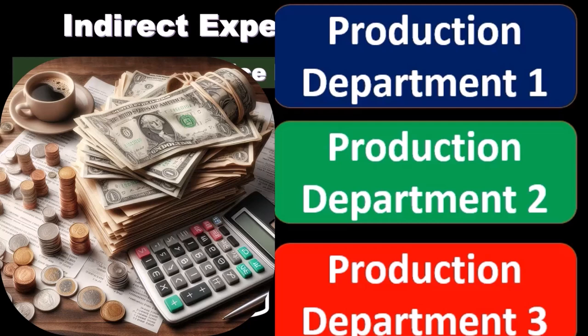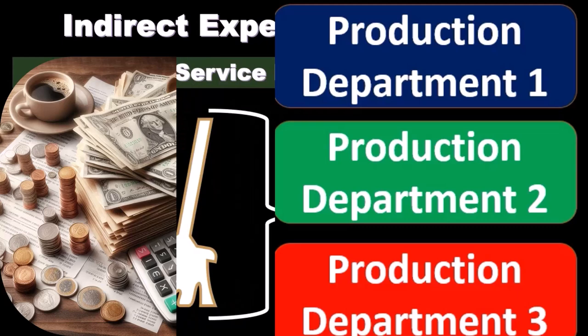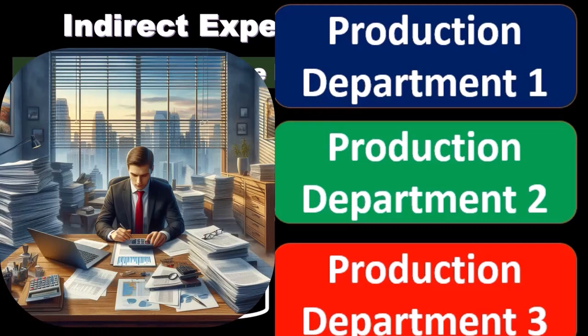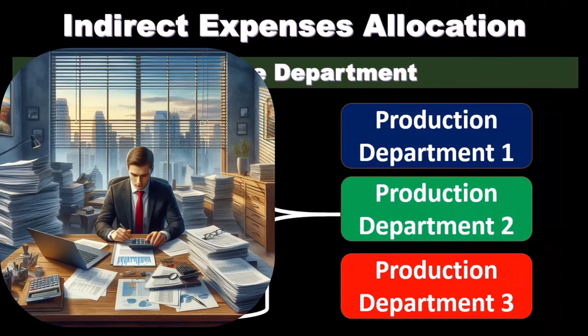To complete the process, we'll use a similar process to do that. We'll determine an activity base and use that ratio process to apply out the entire service department to the relevant departments, using the same ratio analysis and choosing an activity base that would be appropriate for that allocation operation.